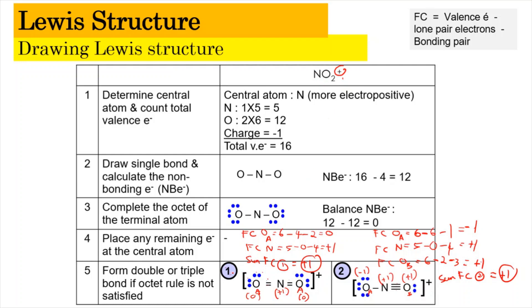Comparing both structures: structure number one has charges of zero, plus one, and zero — the lowest overall formal charges. Structure number two has minus one, plus one, and plus one, which does not have the smallest charges among the atoms. Therefore, structure number one is the most stable, and we draw that one instead of structure two. That's all for this video — see you again some other time. Bye!